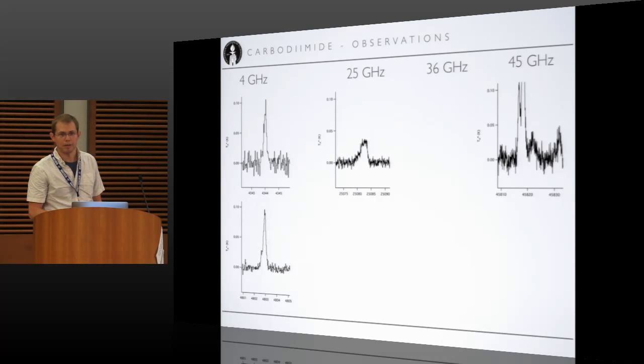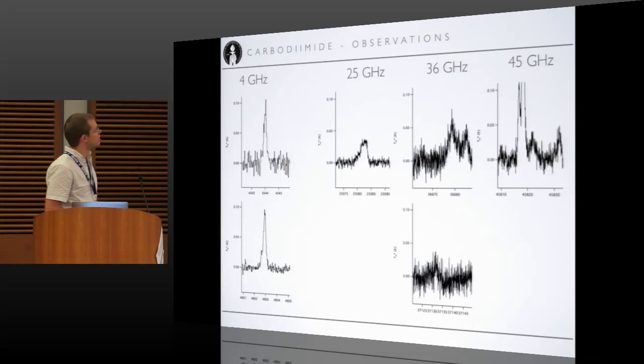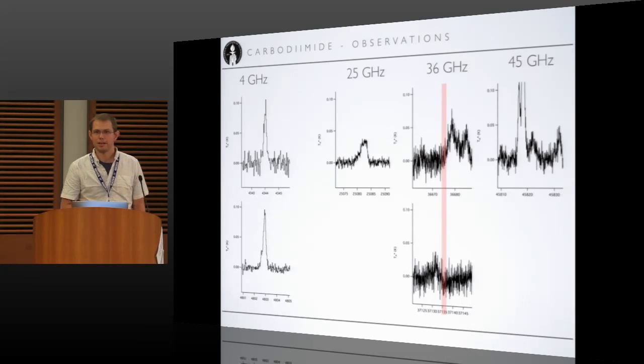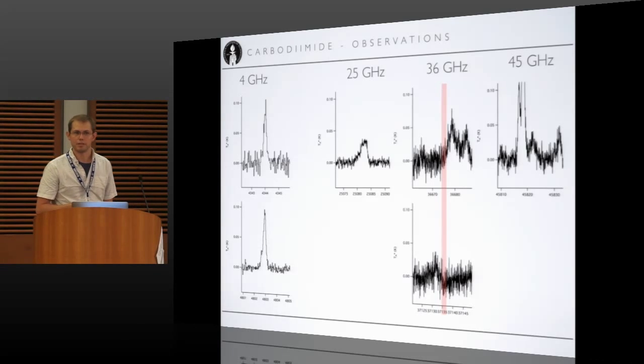But at 36 gigahertz, remember that was going to be the second most intense transition, set of transitions in the line, there's absolutely nothing here. It's just dead noise in the middle. So just like not having one of those transitions for carbon monoxide, now we have a problem. Lab data say it should be there, and the observational data don't see it there.